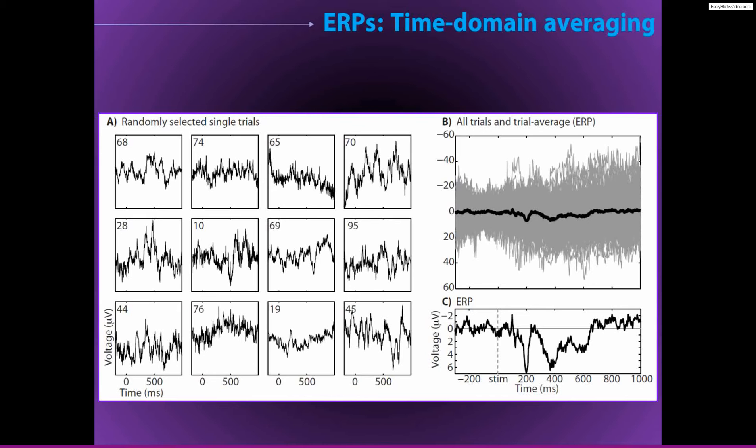This is sometimes interpreted to indicate that the single trial data are very noisy, and therefore we need to average over many trials in order to attenuate the noise.